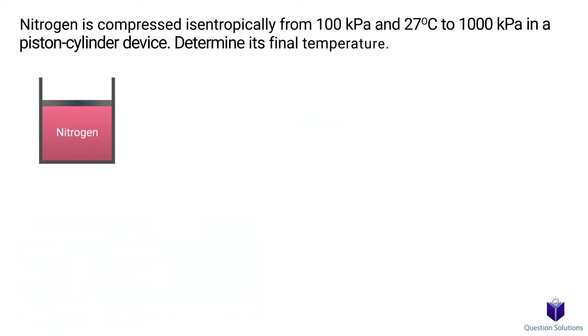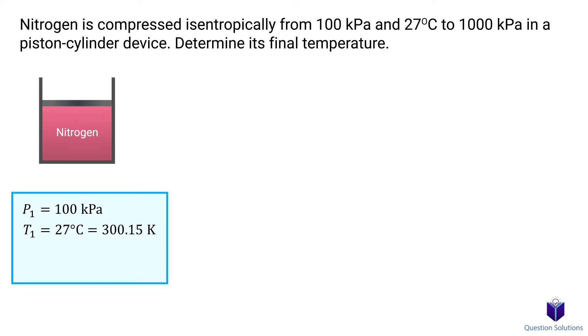Let's take a look at this problem, where nitrogen is compressed isentropically, and we need to figure out the final temperature. We can start by writing down what we know. The initial pressure is 100 kilopascals, and the initial temperature is 27 degrees Celsius. The final pressure is 1000 kilopascals. We will use a constant specific heat assumption to solve this problem.